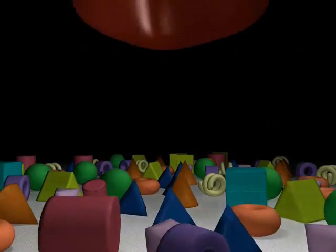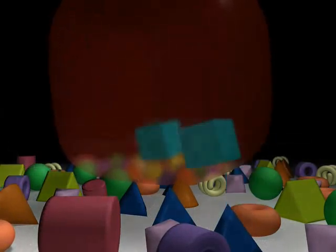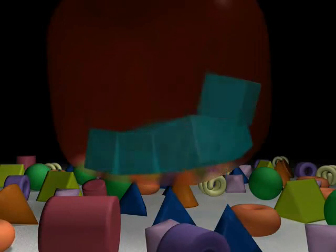By placing the replicases in a compartment, such as a vesicle, the replicases are separated from the other RNAs and will only make copies of each other.